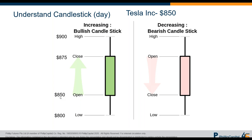If you look at the body itself, it's the open and close. The shadow — the leg, the tail — is actually the low price and the high price. For the bearish candlestick it's the same, but the open and close are opposite because the price went down. So the close would be on the bottom and the open is above. By looking at this candlestick, it tells you open, low, high and close.